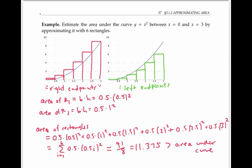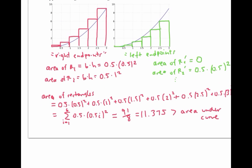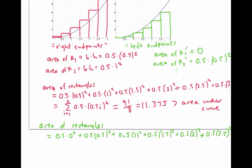For the green rectangles using left endpoints, the first rectangle has area zero. The second rectangle has area given by its base of 0.5 times its height of 0.5 squared. If we compute all six areas and add them up, we get a similar expression to the previous one — only this time we end with 2.5 squared, which is the height of our last rectangle.